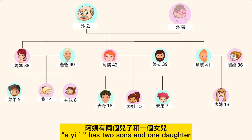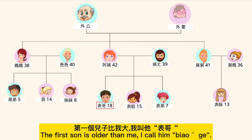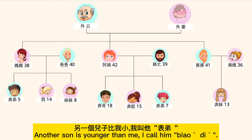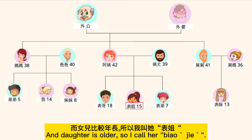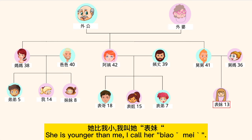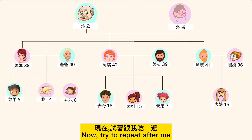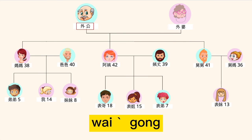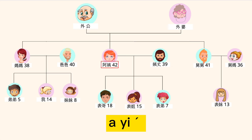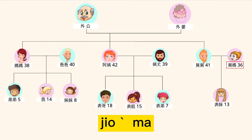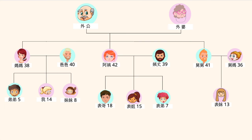阿姨 has two sons and one daughter. The first son is older than me, so I call him 表哥. Another son is younger than me, so I call him 表弟. The daughter is older, so I call her 表姐. 舅舅 has only one daughter — she is younger than me, so I call her 表妹. Now try to repeat after me: 外公, 外婆, 阿姨, 姨丈, 舅舅, 舅妈, 表哥, 表姐, 表弟, 表妹.